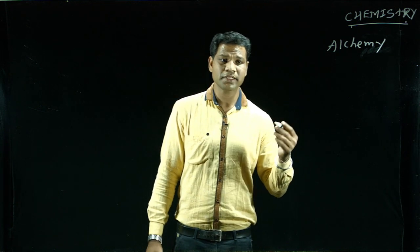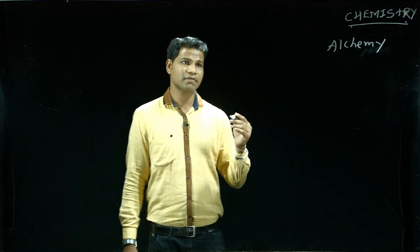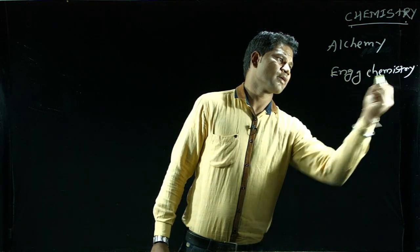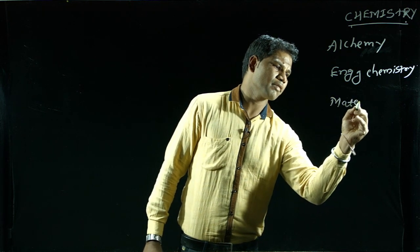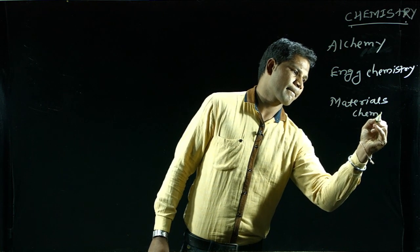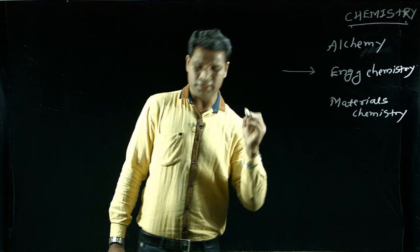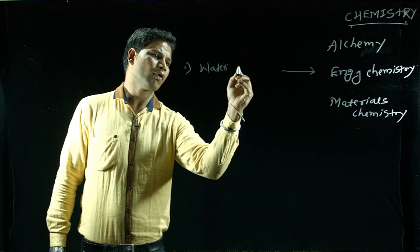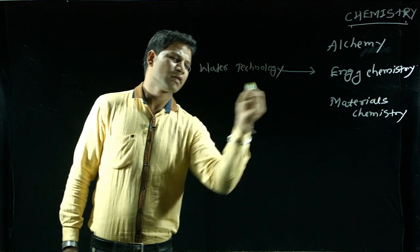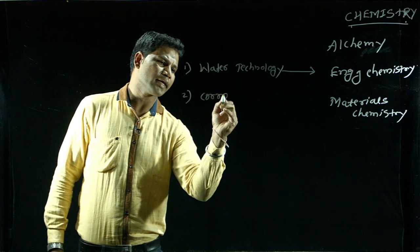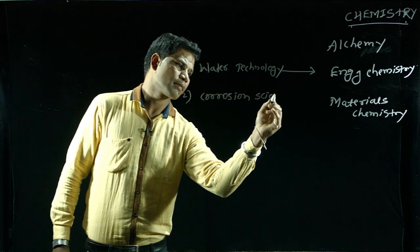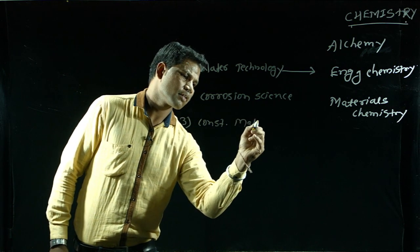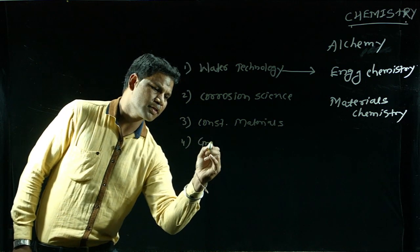Our curriculum is divided into two different semesters. The first semester deals with Engineering Chemistry and the second semester deals with Materials Chemistry. Engineering Chemistry comprises four different units: first, Water Technology for 12 marks; second, Corrosion Science; third, Construction Material; fourth, Green Chemistry and Battery Technology.